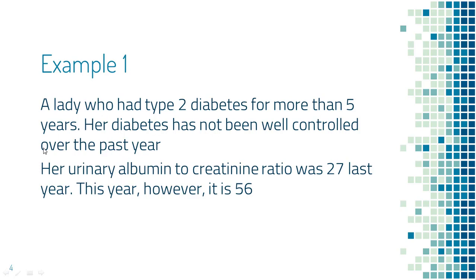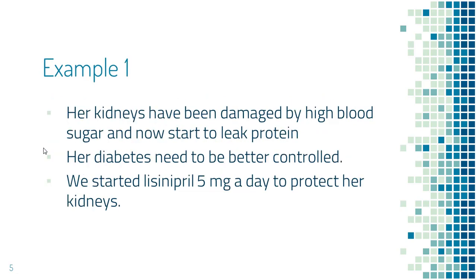Now let's look at an example. This is a lady with type 2 diabetes for more than five years. Her diabetes has not been well controlled over the past year — her A1C has always been above 7, sometimes even above 9. Her urinary albumin-to-creatinine ratio was 27 a year ago, and now it's 56. Her kidneys have been damaged by the high blood sugar and are now starting to leak protein. She really needs to control her diabetes better. We also started lisinopril 5 milligrams a day to protect her kidneys.